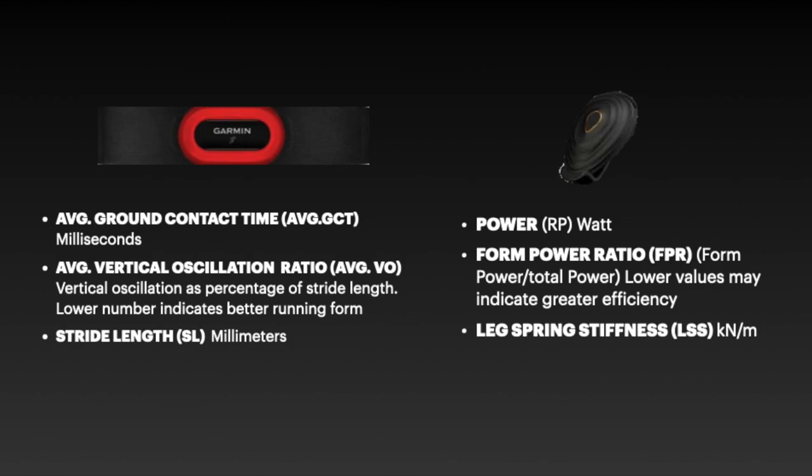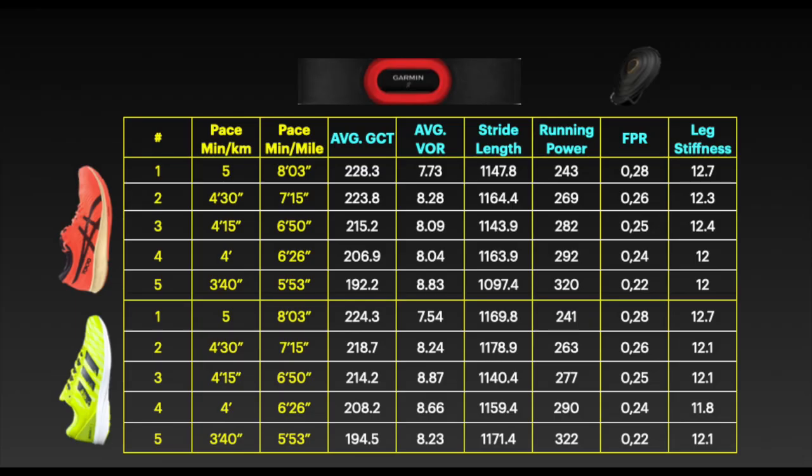And finally, the leg spring stiffness measures the stiffness of the muscles and tendons in your legs, and therefore it is a measure of how well a runner recycles the energy applied to the ground in each stride. Increases indicate economy improvement over time. That being said, now let's see and comment on the results.